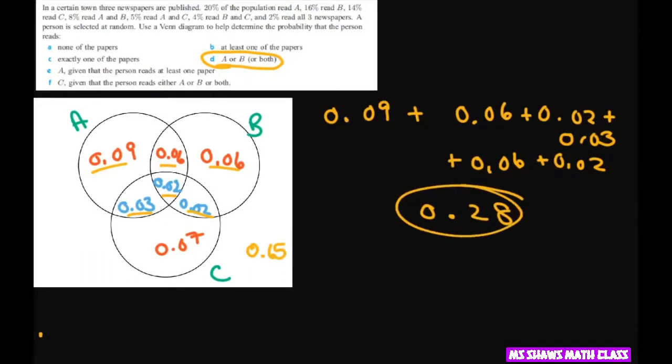And the next question A or B or both. So that's going to be A or B or both. And that's going to be 0.09. That's A or B. So or means plus. B is 0.06 or both. So or both of these are these two. So that's plus 0.02 plus 0.03. So when you add all that up we have to add also another 0.06 plus 0.02. So basically you're adding one two three four five numbers. And that's going to give you 0.28 for D.